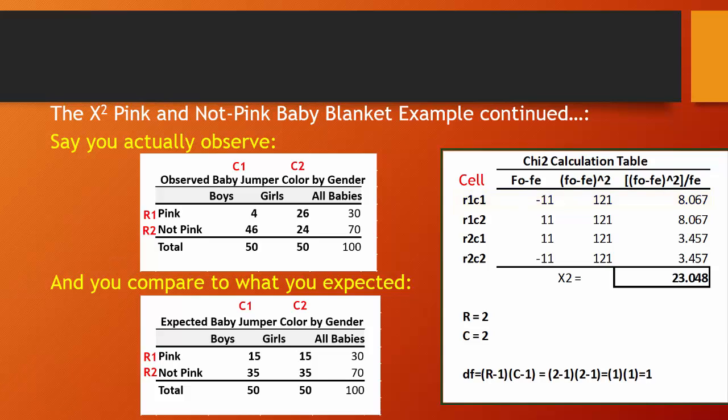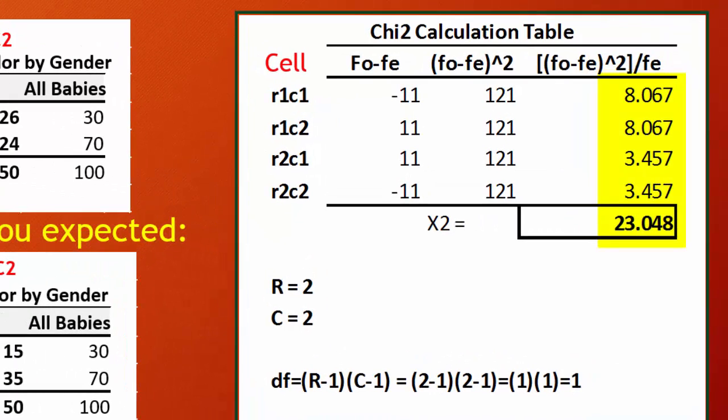You continue this pattern for R1C2, R2C1, and R2C2 — doing all the observed minus expected differences, squaring their values, and dividing by expected. The final column, when you sum it up, is the chi-square statistic.